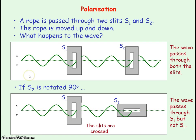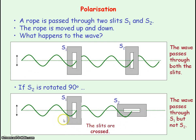So we can see that for a transverse wave, if the slits are parallel to each other the wave will pass through, but if the slits are crossed — perpendicular to each other — the wave will pass through the first slit but not the second.